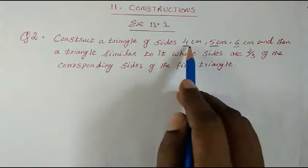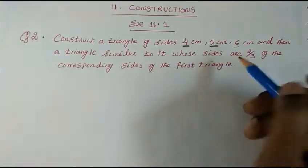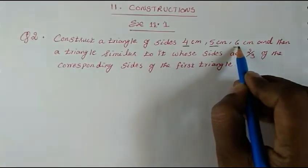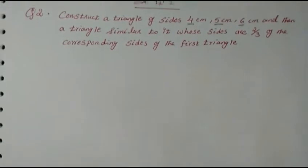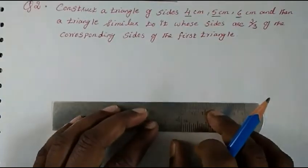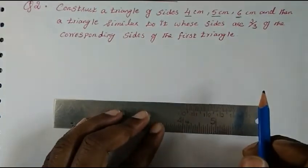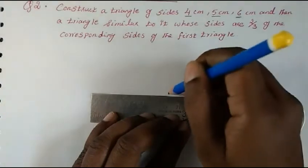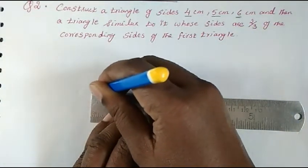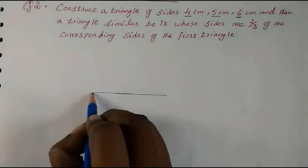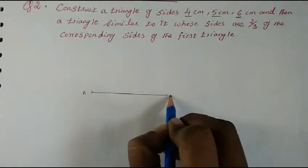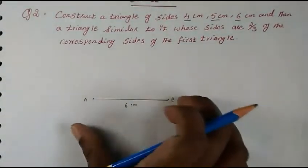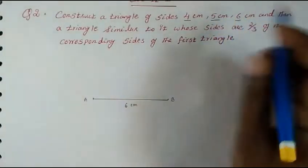First, we will construct a triangle with the given sides. Whenever they give you sides like this, the best thing is to draw any side, but take the biggest one first. So we'll take 6 centimeters as the base. This is 6 centimeters — let's name this as A and B. Please write down all these details because it's very important, otherwise your marks will be cut.